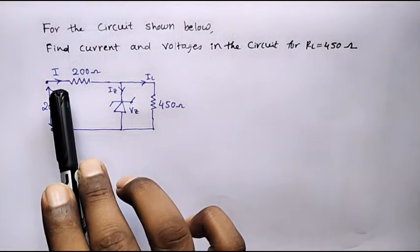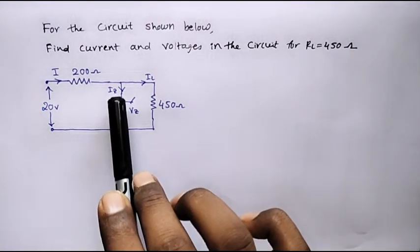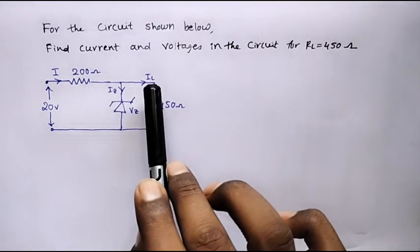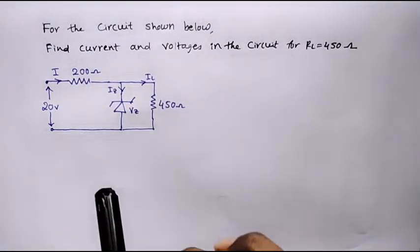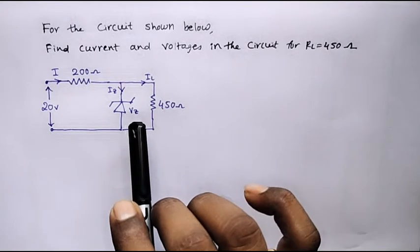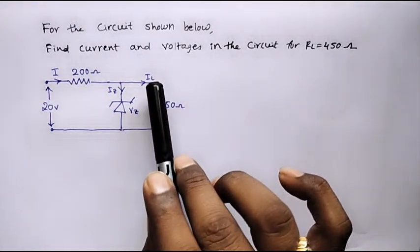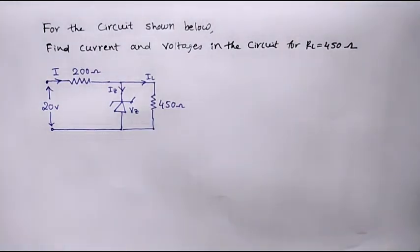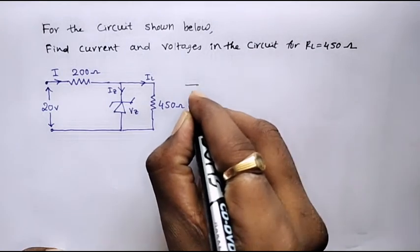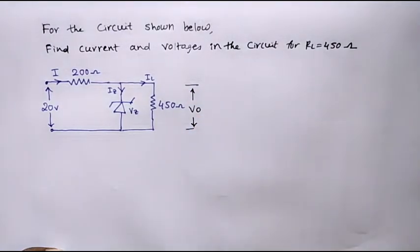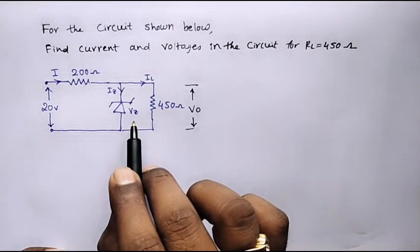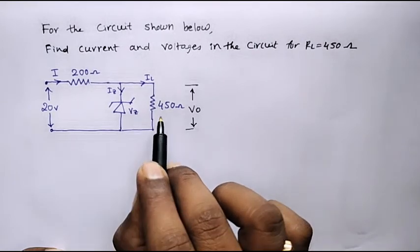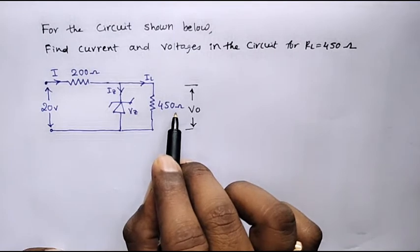Let I be the total current flowing in the circuit. IZ is the current through the Zener diode and IL is the current through the load resistor. We can observe that in the circuit the VZ value is not given and we don't know the value of IL. The voltage across the 450 ohm resistor is the load voltage or output voltage VO, which equals Zener voltage. But here we don't know the value of Zener voltage, so we will try to find the voltage across the 450 ohm resistor, that is VO.